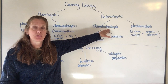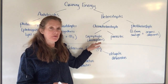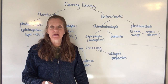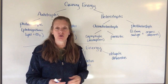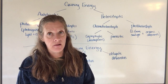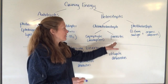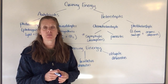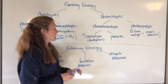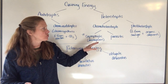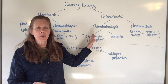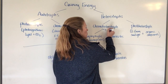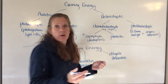Chemo heterotrophs can be broken down into a couple of different categories: saprophytes and parasites. A saprophyte is commonly known as a decomposer. Parasites feed off of another organism at the expense of that organism — harm is done to it. The vast majority of bacteria are saprophytes or decomposers, and they get their energy from organic compounds available to them — just like our energy all comes from organic compounds.